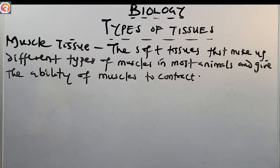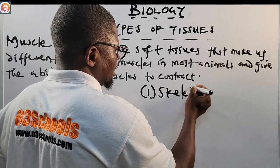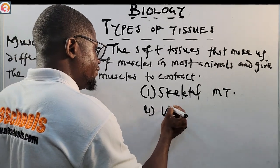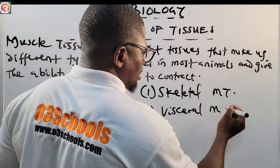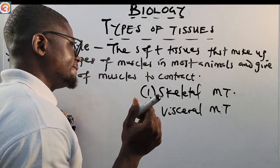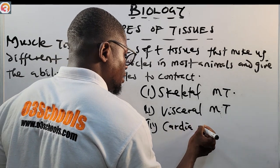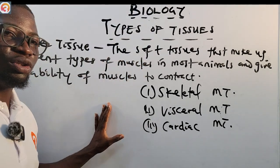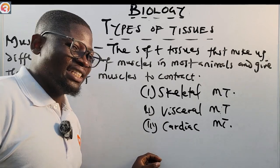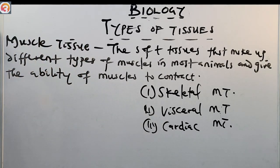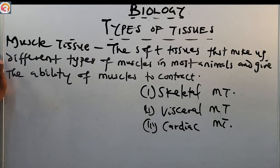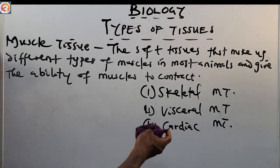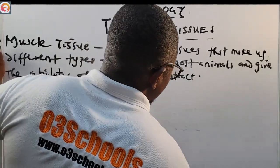There are three types of muscle tissue: skeletal muscle tissue, visceral muscle tissue, and cardiac muscle tissue. These are the three types of muscle tissue we encounter.